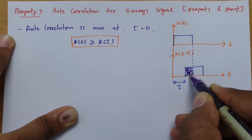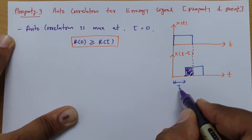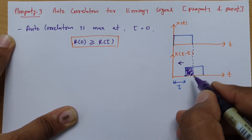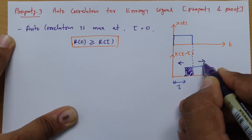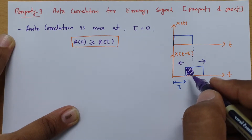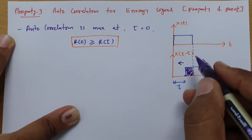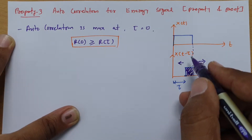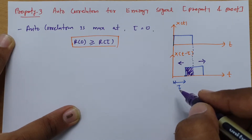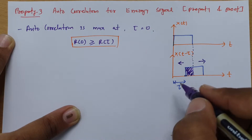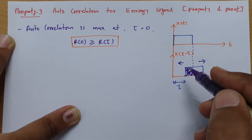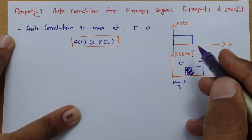This signal is similar in that overlapping zone only. That similarity depends on tau. If you decrease tau, the shifted signal moves in one direction and overlap increases; if you increase tau, the shifted signal moves the other way and similarity decreases. So as you increase tau, autocorrelation decreases, and at tau equals zero, the two signals are identical, making autocorrelation maximum.